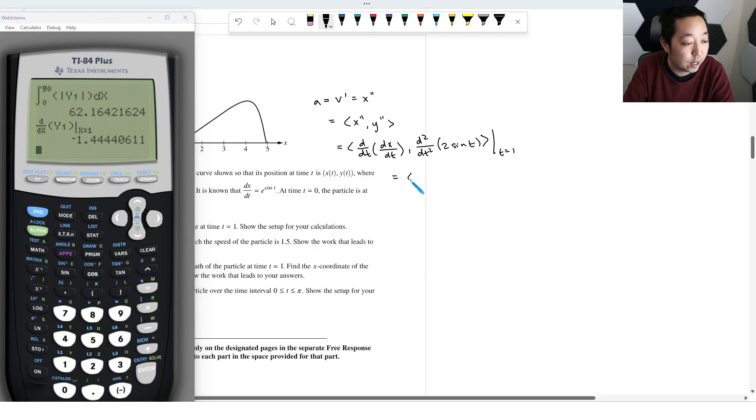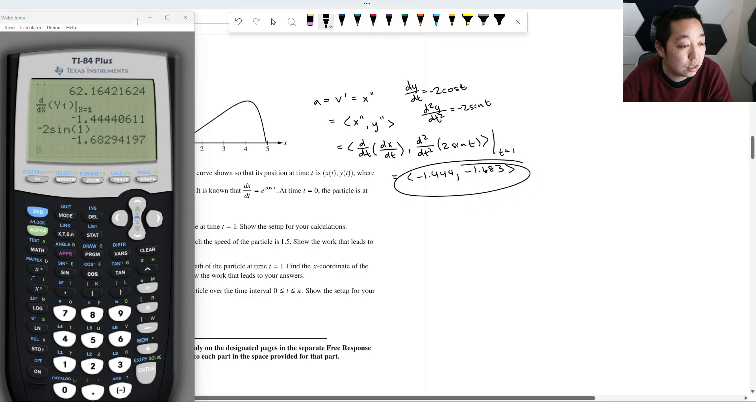So this is going to be the vector negative 1.444. And then two sine of t, if you take the second derivative of that, that one you can do. The derivative is negative. So dy/dt is given by negative two cosine of t. And then the second derivative is going to be negative two sine t. And so that's going to be negative two sine of one. Make sure you're in radian mode when you do that. That's negative 1.683. Okay, so that is the acceleration vector there.